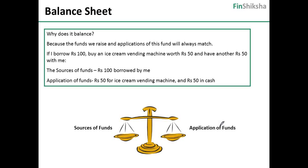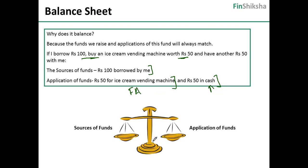You will find that if I borrow 100 bucks to buy an ice cream vending machine worth 50 rupees and have another 50 with me, the source of funds is 100 borrowed by me. Application of funds is 50 fixed asset, ice cream vending machine, plant and machinery, and 50 cash, current asset, cash and bank balances. So at any point of time, the sources of funds would match.